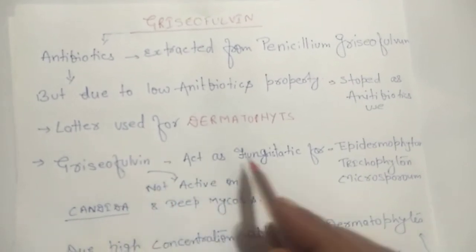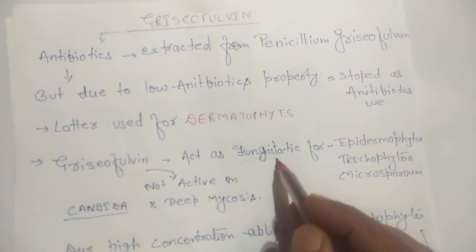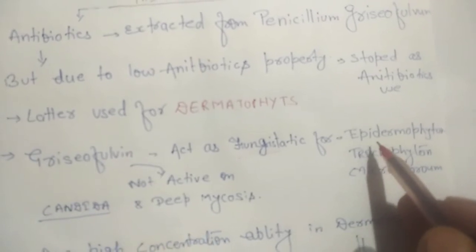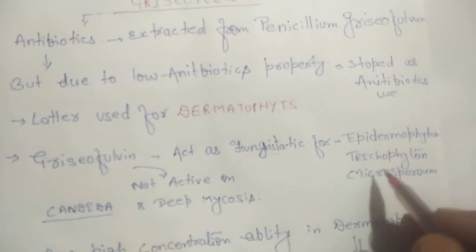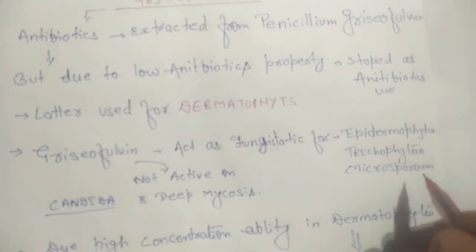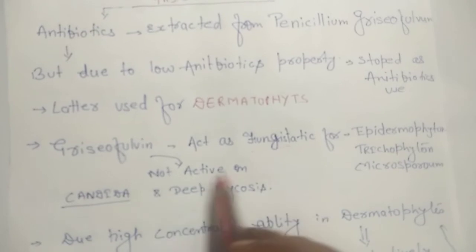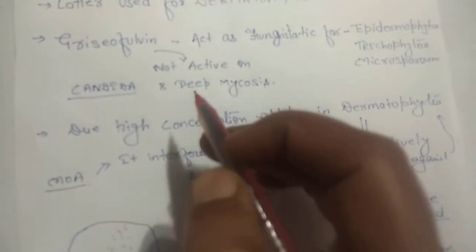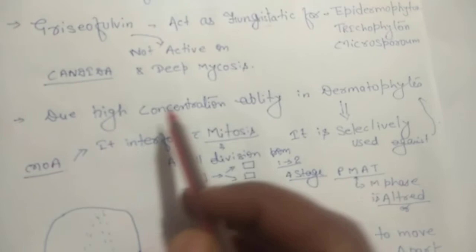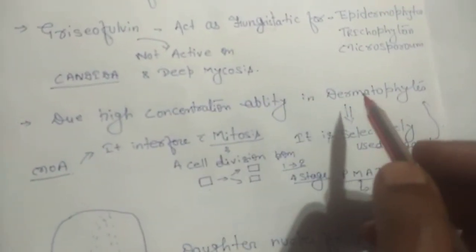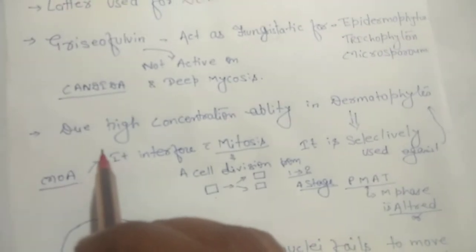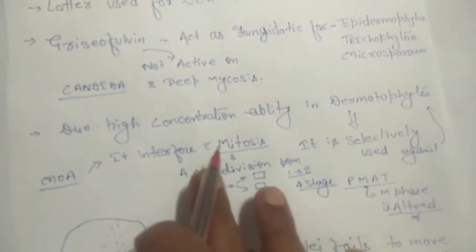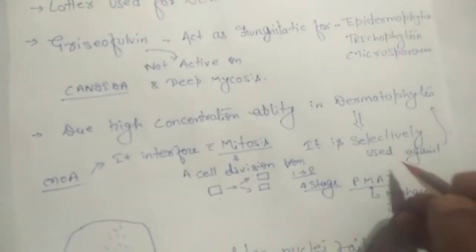Griseofulvin acts as a fungostatic in nature. It is very much effective against Epidermophyton, Trichophyton, and Microsporum. Griseofulvin is not active on deep mycosis and Candida infection. Due to its high concentration ability in the dermatophytes, griseofulvin is selectively used against dermatophytes.